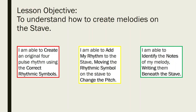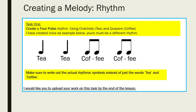At the very least today, the red box on the left: I am able to create an original four-pulse rhythm using the correct rhythmic symbols. We've looked into creating rhythms before — we did it in Year 7 and earlier this half term. Once you've done that, we move on to the yellow box: I'm able to add my rhythm to the stave, moving the rhythmic symbols on the stave to change the pitch. That will create a melody. Then you'll show your understanding by identifying the notes of your melody by writing them beneath the stave.